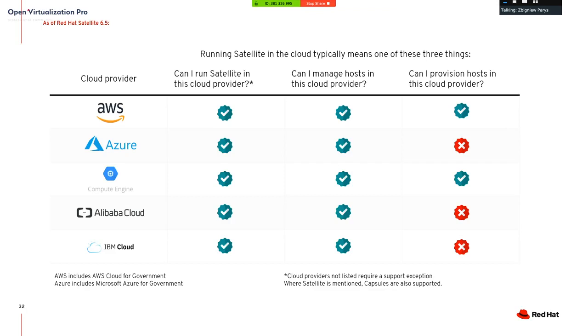You can add capabilities to use cloud providers to extend your own environment. The directly supported cloud providers are AWS, Azure, Google Cloud Engine, Alibaba, and IBM Cloud. Some cloud providers are fully supported for all parts; others need some actions done through their own cloud tools. For example, for Azure you cannot provision directly, but you can use Azure CLI to provision a virtual machine, while the rest of the integration is already done.